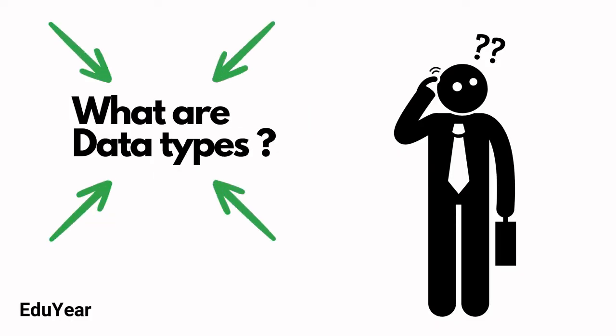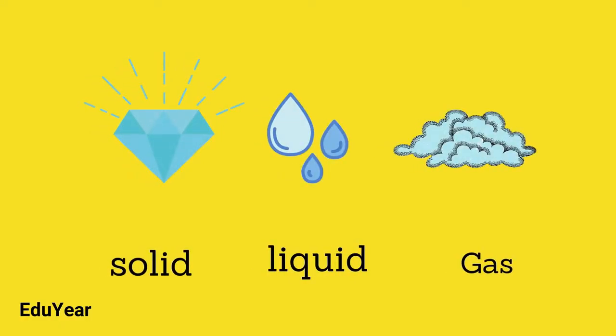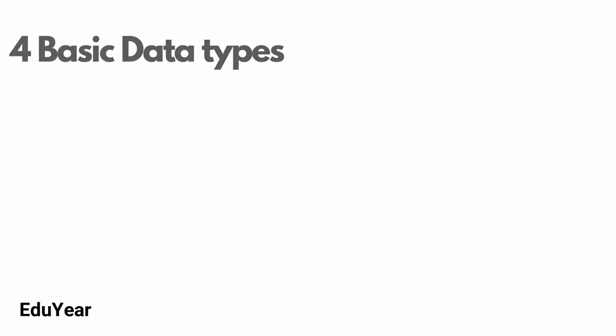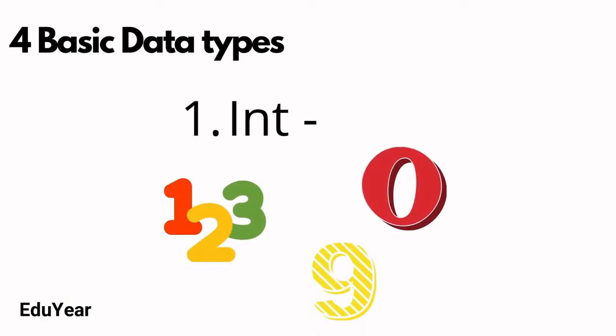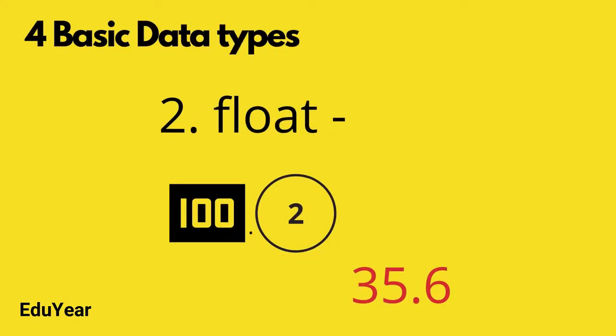What are data types? Let us understand with an example. As we all know, matter has three states: solid, liquid, and gas. Same in Python, we have four basic data types. First, integer like 0, 1, etc. Second, float like 0.3, 1.3, etc.